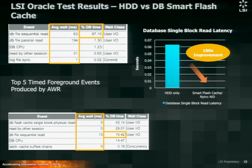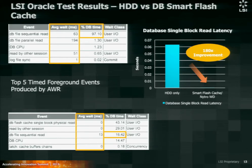In another benchmark, the top chart shows an AWR report from the database. The number one wait event is a sequential read with an average wait time of 63 milliseconds, and that one wait event took 97% of the total database time. By just implementing Oracle Database Smart Flash Cache, the number one wait event becomes the Database Smart Cache physical read at an average of 352 microseconds, resulting in a 180x improvement in single block read latency reduction. The dbfile sequential read also dropped from 63 milliseconds down to 13 milliseconds.